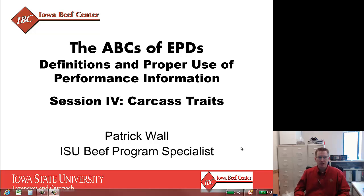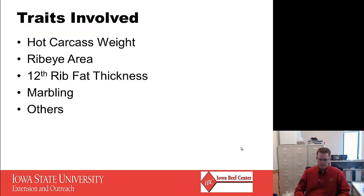The fourth and final session in our four-part series on the ABCs of EPDs is carcass traits — obviously at the end of the performance chain. We'll end with the traits that make us the most money on the rail and decide how to use those in a selection program. The traits involved are hot carcass weight, rib eye area, rib fat thickness, and marbling. There are a few others that can help us along the way, but basically the traits that we measure on the rail are the same ones that we measure from an EPD standpoint.